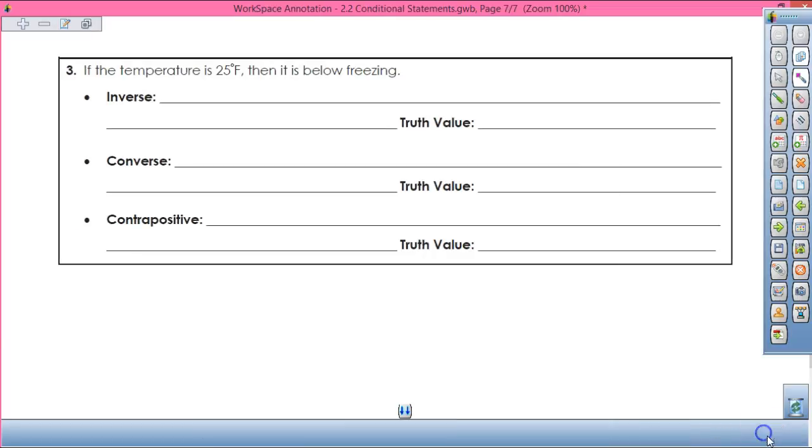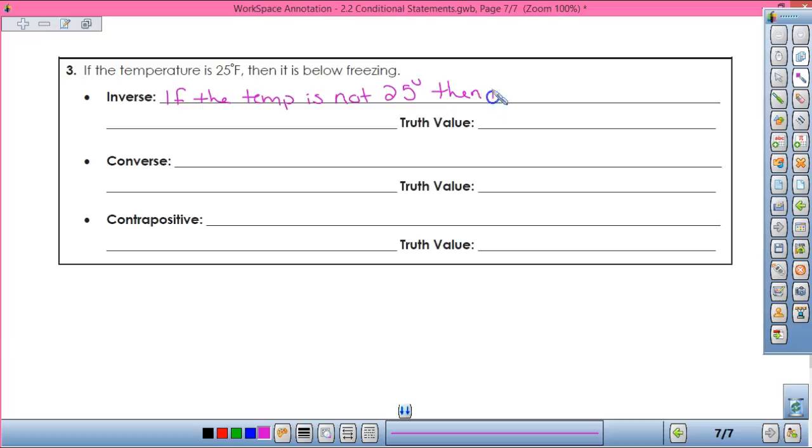Alright, let's skip this one because I don't like it. Let's do this one. If the temperature is 25 degrees Fahrenheit, then it is below freezing. So the inverse is what? If the temp is not 25 degrees, then it's not below freezing. True or false? False. It could be 2 degrees. It could be negative 40 degrees.